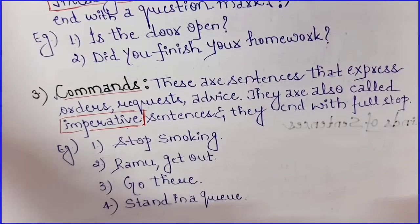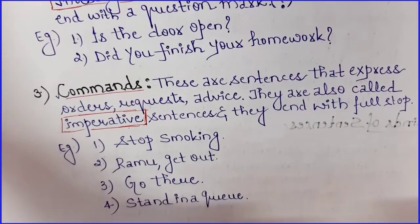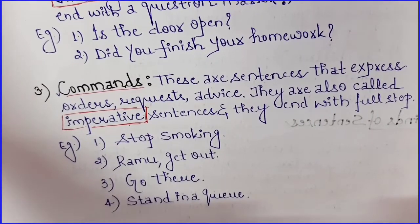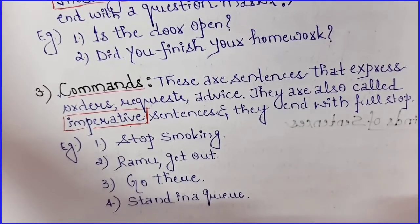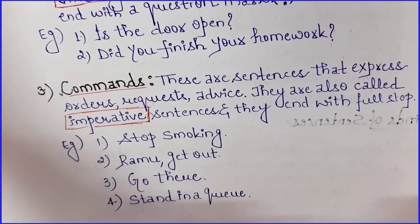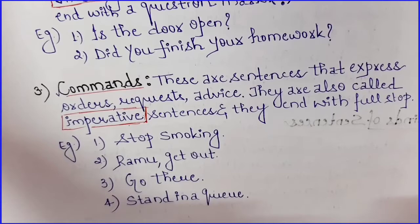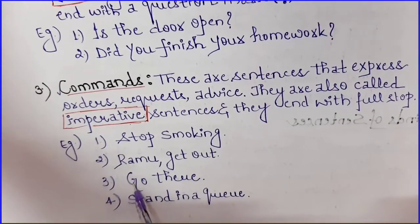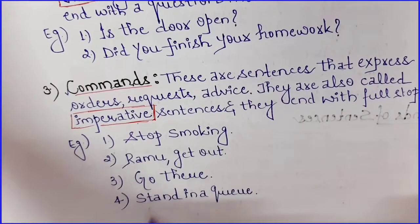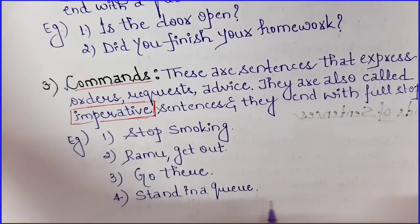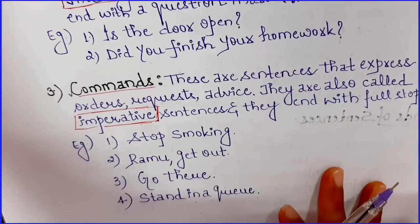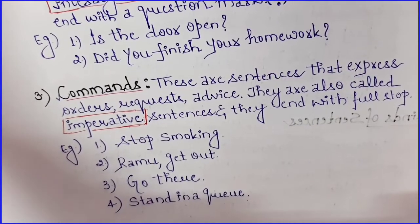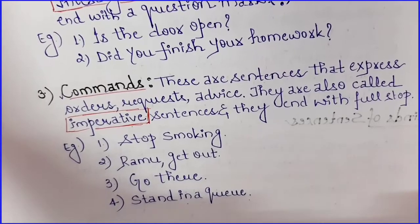To distinguish between statements and commands — commands mein koi mujhe order de raha hai, request kar raha hai, ya advice de raha hai. For example: 'Stop smoking' — I am advising or ordering you to stop smoking, so it is a command. 'Ramu, get out' — I am ordering you. 'Go there', 'Stand in a queue' — these are all orders, advice, or requests used in day-to-day life, and we can easily identify whether a sentence is a statement or a command.